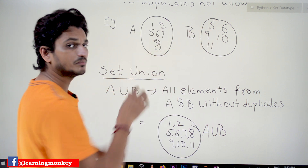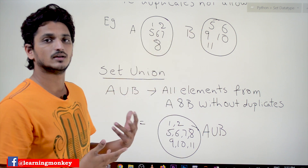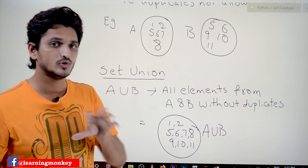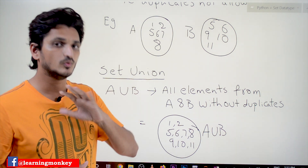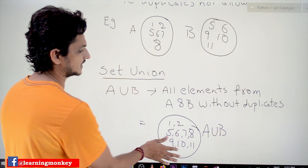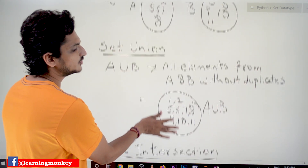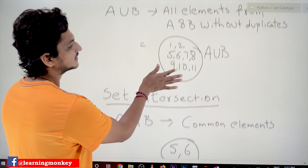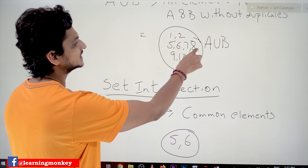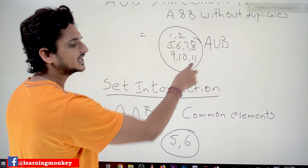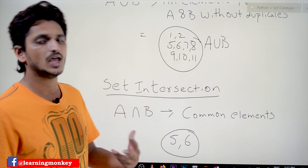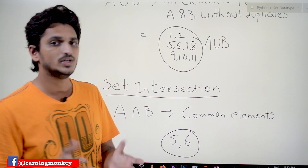Here 5 and 6 are repeated in both sets, so we take them only once. Therefore a union b gives the new set: 1, 2, 5, 6, 7, 8, 9, 10, 11 — all elements from both sets without duplicates. That is what set union is.